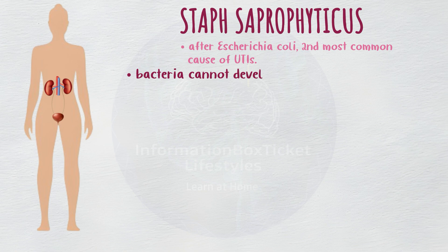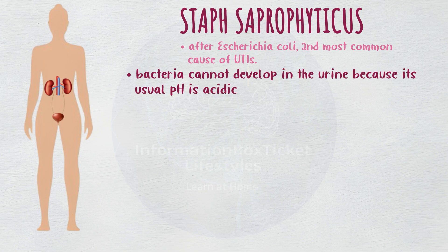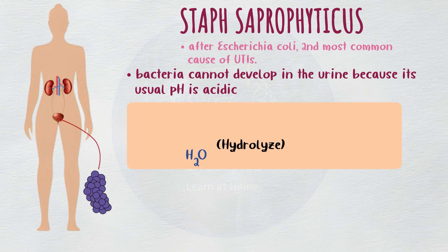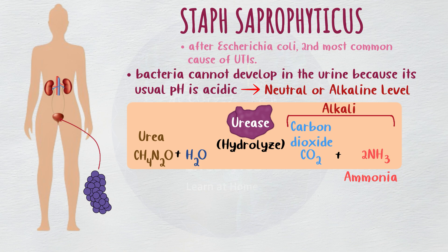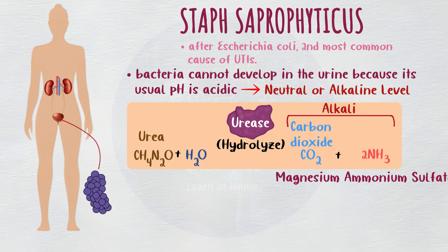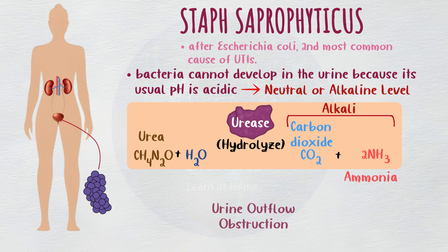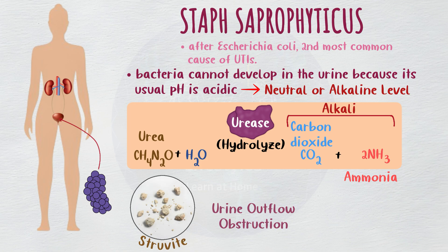Bacteria cannot develop in urine because its usual pH is acidic. However, as soon as Staph saprophyticus enters the urinary system, it hydrolyzes urea via urease to produce carbon dioxide and ammonia, an alkali. Thus, ammonia raises the pH of the urine to a neutral or alkaline level, which promotes the growth of bacteria. Ammonia can also combine with sulfates and magnesium to produce complexes that precipitate magnesium ammonium sulfate. Urine outflow restriction may result from the production of struvite, a type of urinary stone.